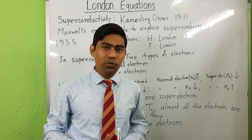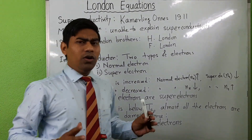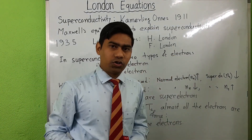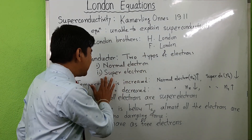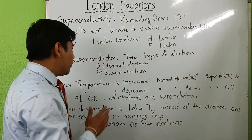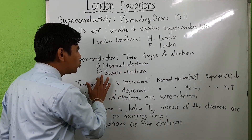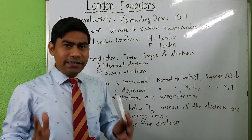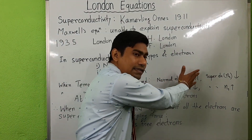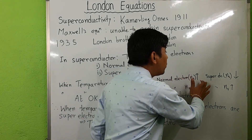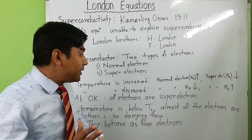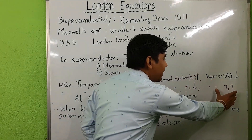Let's see what the London equations are. According to the London brothers, in a superconductor there are two types of electrons: normal electrons and superelectrons. If we increase the temperature of the superconductor, then the number density of normal electrons increases and the number density of superelectrons decreases. And if we decrease the temperature of the superconductor, then the normal electrons decrease and superelectrons increase.